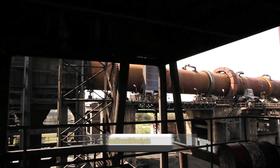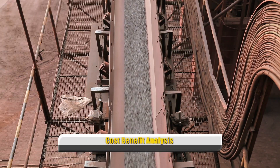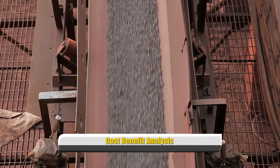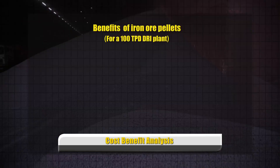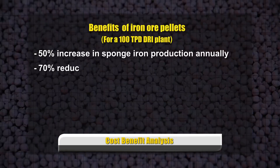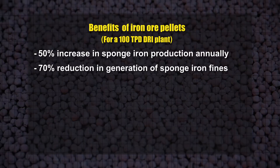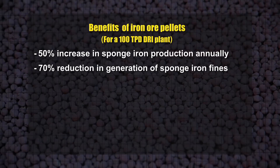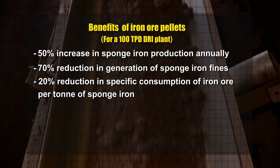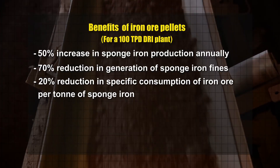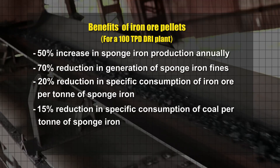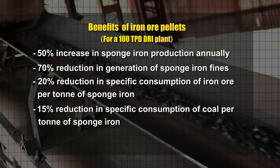For a 100 TPD DRI plant, use of iron ore pellets vis-à-vis lumps leads to the following benefits: 50% increase in sponge iron production annually, 70% reduction in generation of sponge iron fines, 20% reduction in specific consumption of iron ore per tonne of sponge iron, and 15% reduction in specific consumption of coal per tonne of sponge iron.